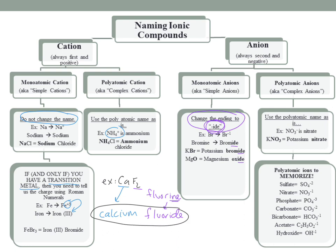One temptation for students looking at ionic compounds is to try to account for the subscript numbers. For ionic compounds, you do not use multipliers — things like di-, tri-, tetra-, etc. This is not 'calcium difluoride'; it's just calcium fluoride. We don't say 'di' because it's assumed: calcium has a 2+ charge and fluoride has a −1 charge, so there must be two fluorines. It's redundant, so we don't use multipliers for ionic compounds.